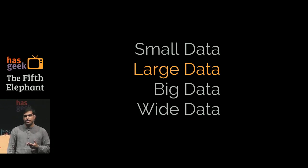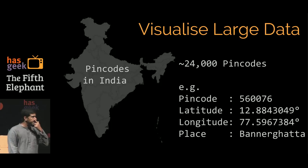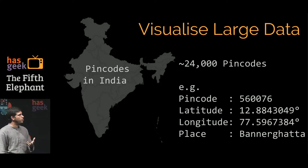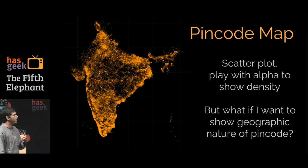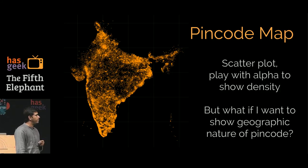Let's look at large data. Let's take a slightly larger set, 24,000 pin codes, all the pin codes in India. A pin code would be 560076, Bannerghatta Road, that's where I live, and this is the latitude and longitude. If I wanted to visualize this, I would just create a scatter plot. I could plot them, and with some playing around with alpha, I can actually start to see the pin codes and the structure behind it. I can see the sparseness in central India, look at the deserts which are sparse, can even make out the Western Ghats, and actually get a sense of the data.